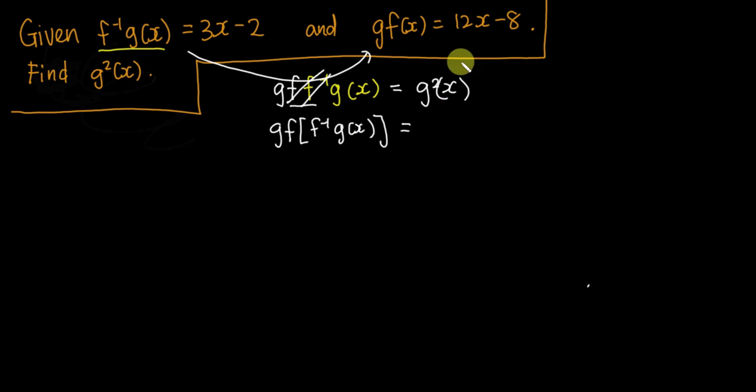My x actually will become whatever f inverse g has, which is 3x minus 2. So this one simplified, you'll get g squared x, and then this one you basically get 36x minus 24 minus 8. So this is g²(x), it will equal 36x minus 32.